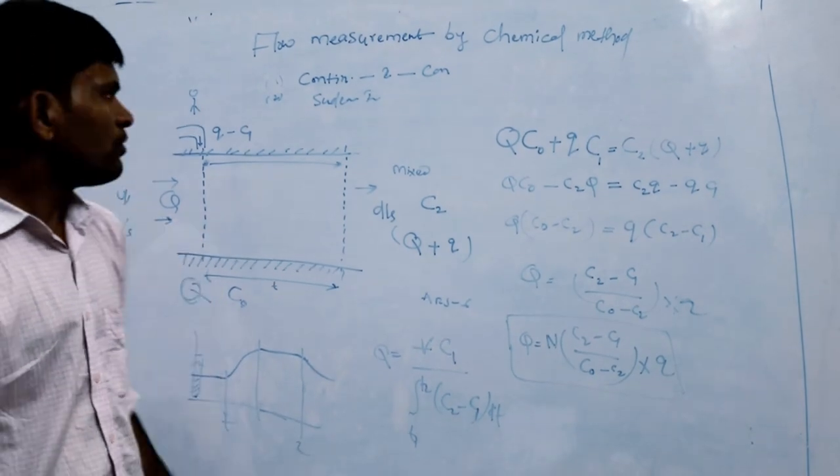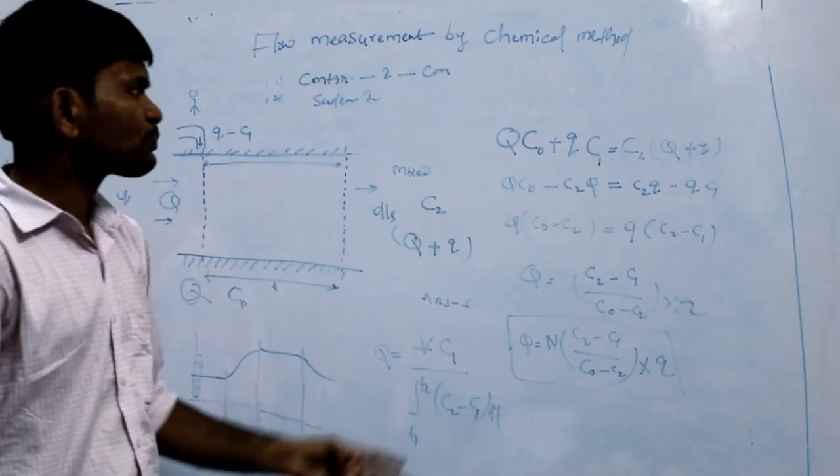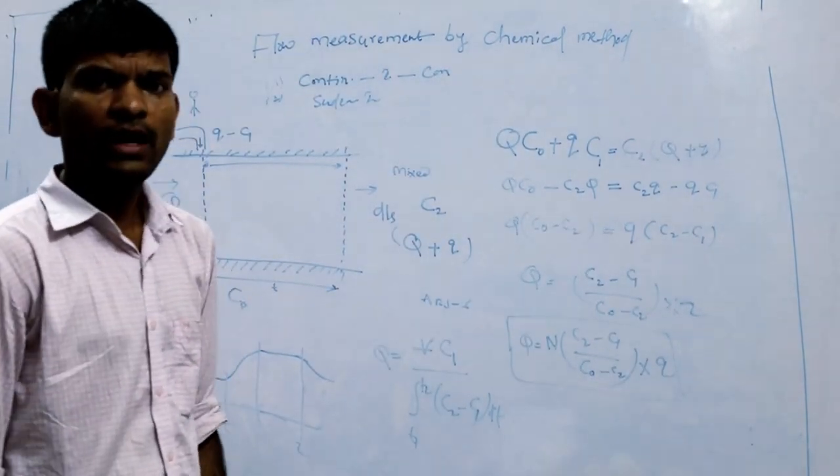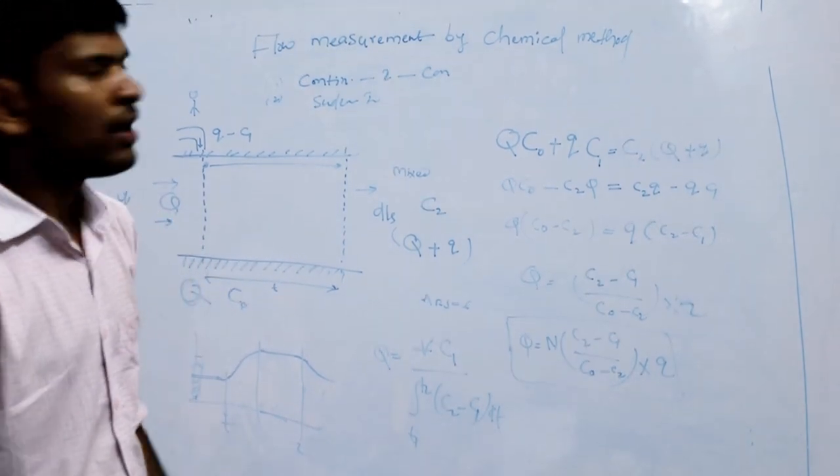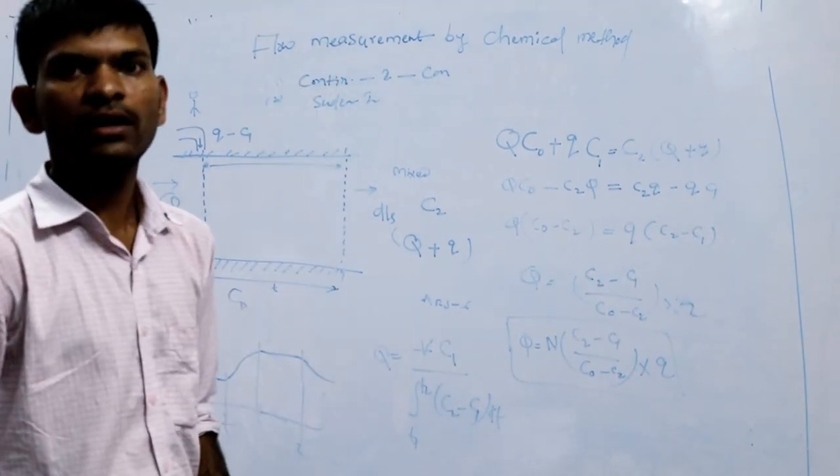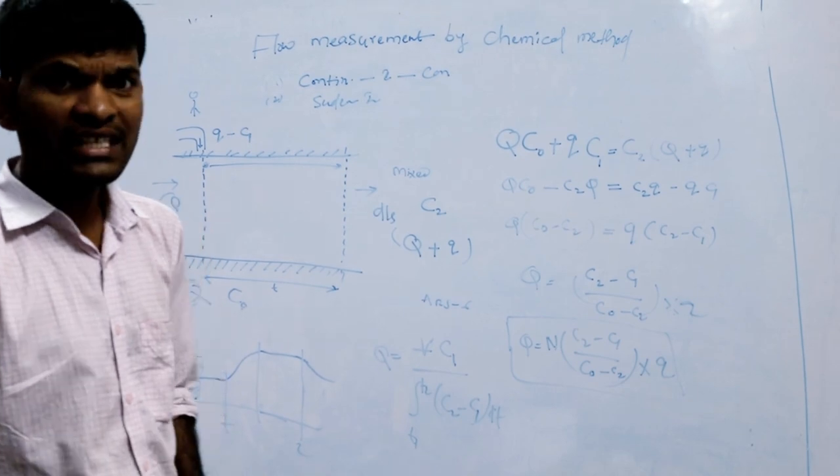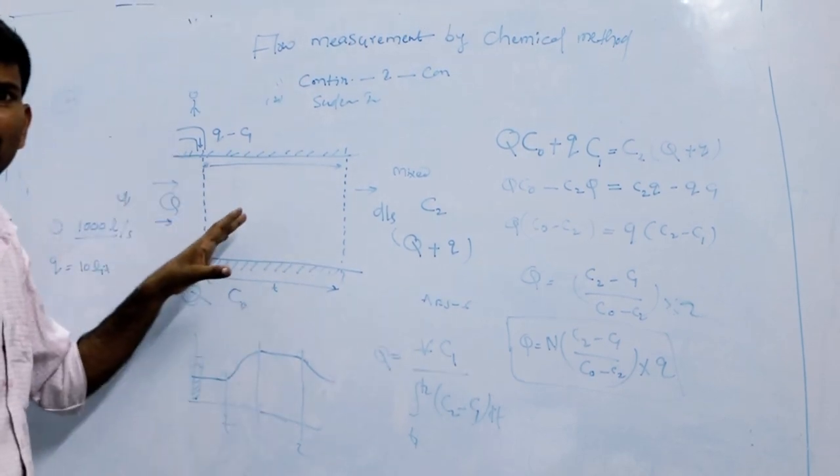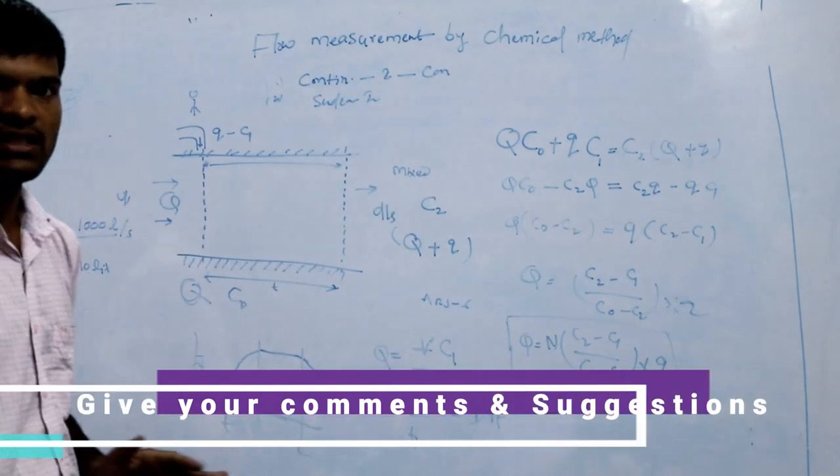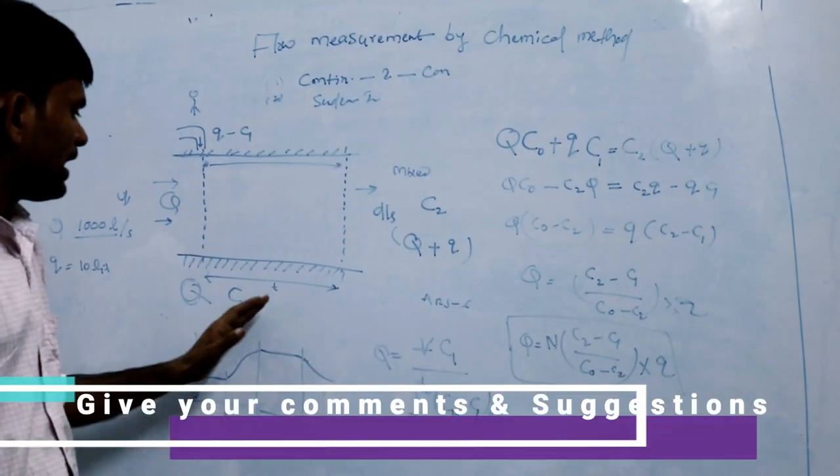Now, different types of chemicals are used, like radioactive methods or simple salts or any type. For this, the channel should be straight, and we cannot measure the cross sections.